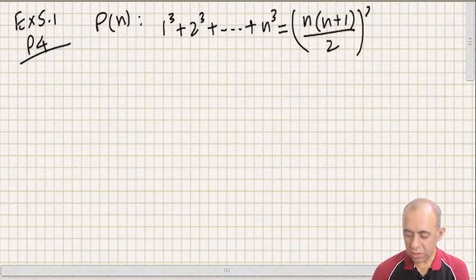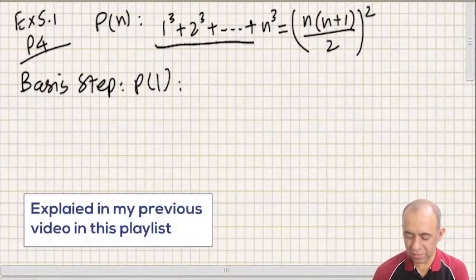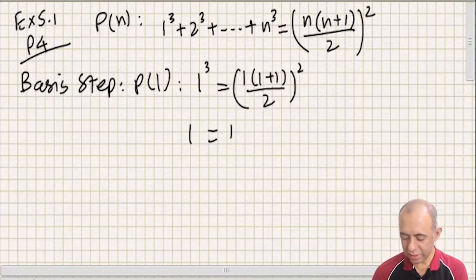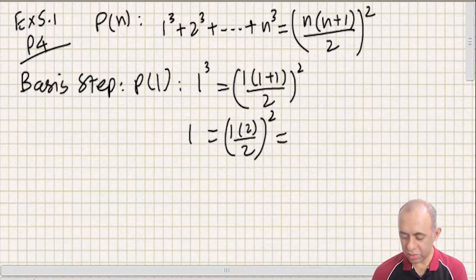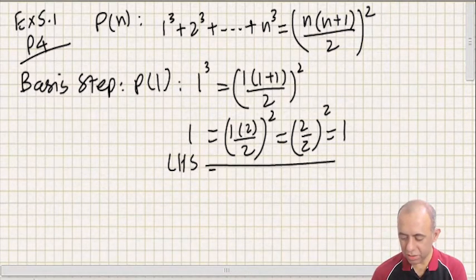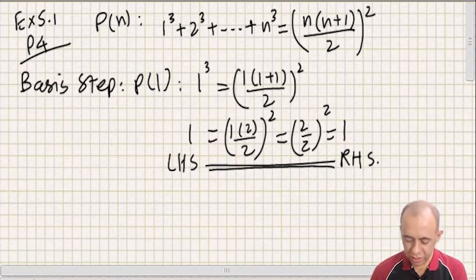Basis step: prove that P(1) is true. The left-hand side will only have one term, so we write 1³. The right-hand side, substituting n = 1, becomes (1 × 2 / 2)², which equals (2/2)² = 1. The left-hand side equals the right-hand side, so P(1) is proven.